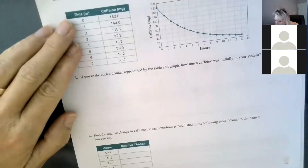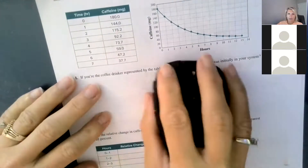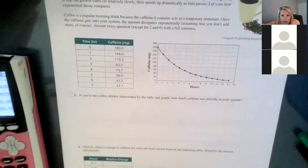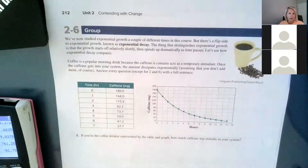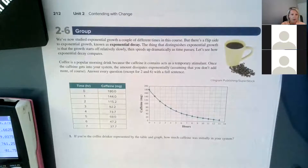We're going to move to the second part of lesson 2.6 on page 212. Things are going to look slightly different from what we had with exponential growth. We've now studied exponential growth a couple of times in this course, but there's a flip side — and this is exponential decay. The thing that distinguishes exponential growth is that growth starts off relatively slowly then speeds up dramatically as time passes. Let's see how exponential decay compares.